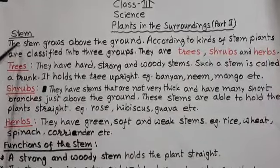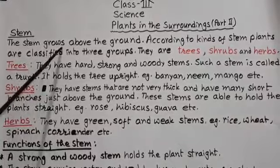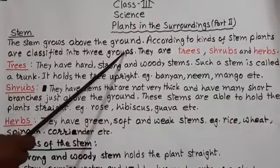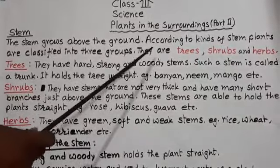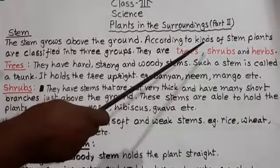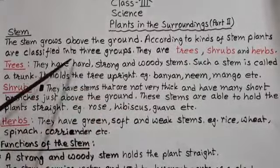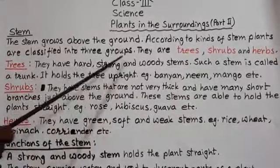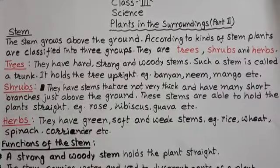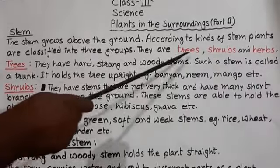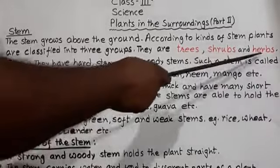Now all of us we know that the stem grows above the ground. Now according to the kinds of stem, plants are classified into three groups. They are trees, shrubs and herbs.